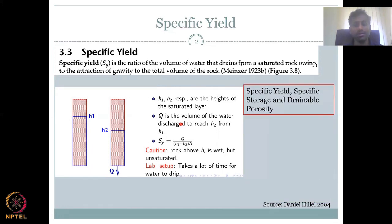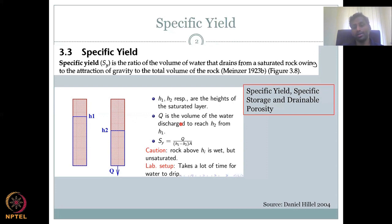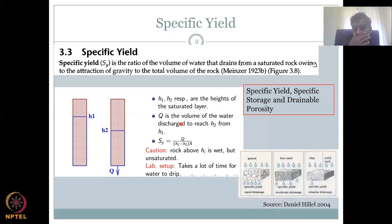You have to understand that all the rock is wet but unsaturated above the water table. This takes a long time because gravity acts very slowly and has to overcome the attraction of the rock material on water. There are different names given: specific yield, specific storage, and drainable porosity — all are the same. Different papers label it differently depending on how they choose to term it.